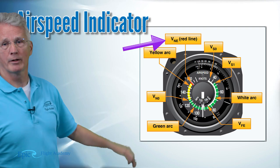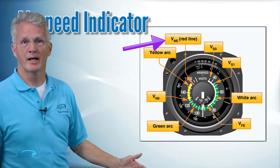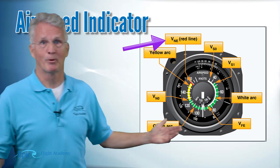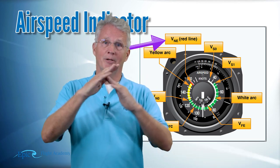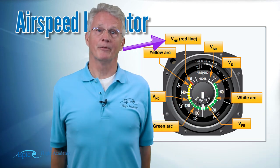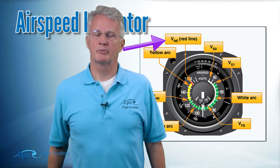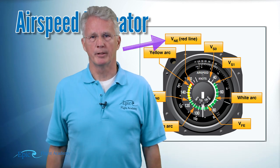VNO moves us up into the yellow arc, and at the top of the yellow arc you see the red line. What do you think that is? Makes perfect sense — red line, stop here, no go, can't go any further. That's the maximum airspeed for this airplane.